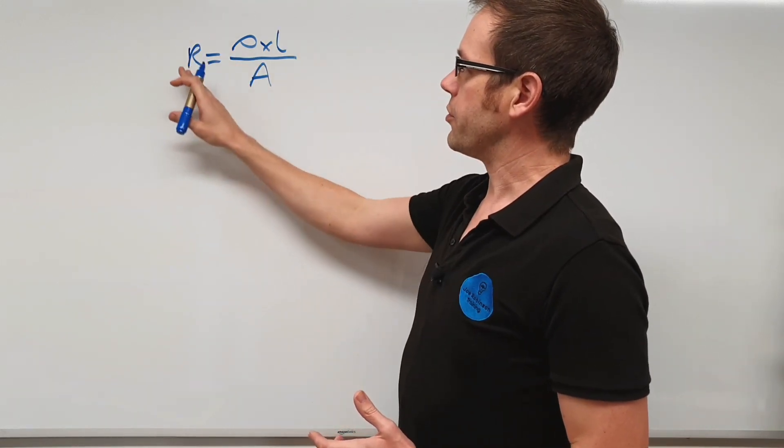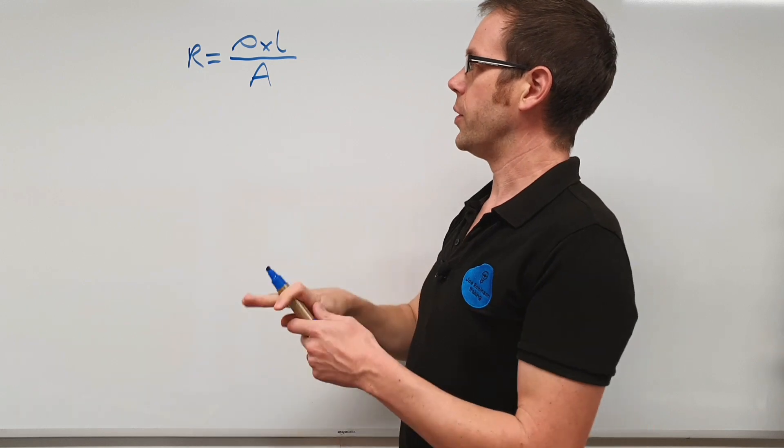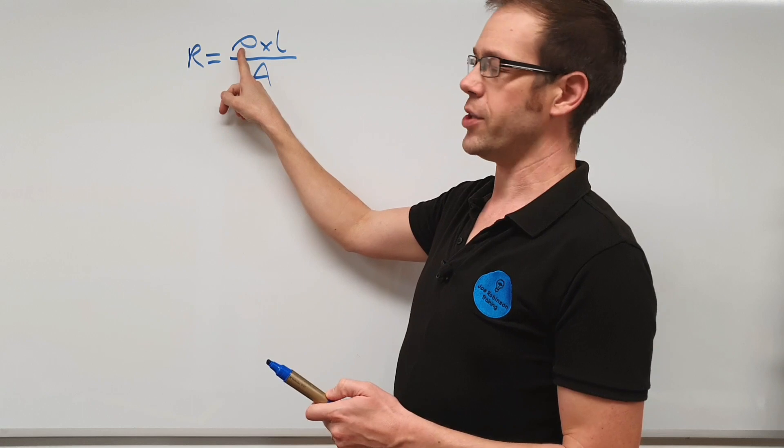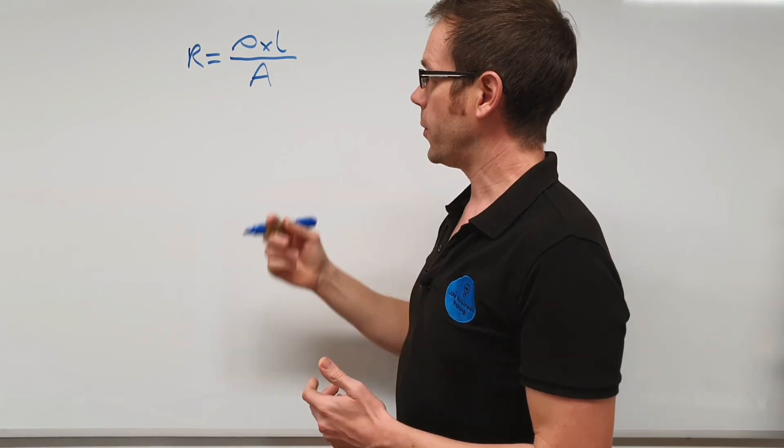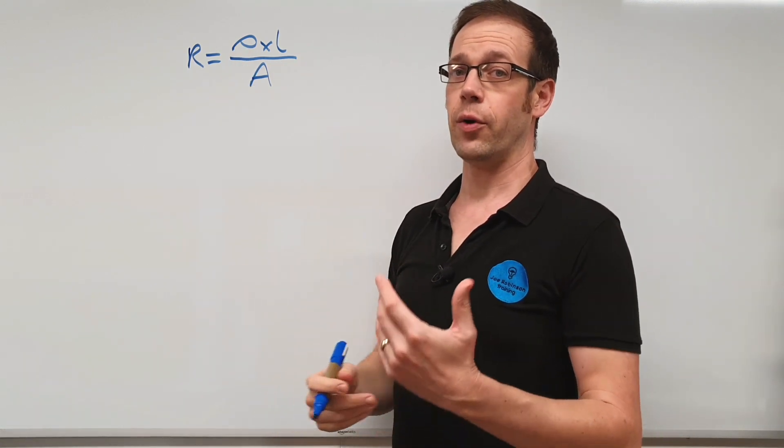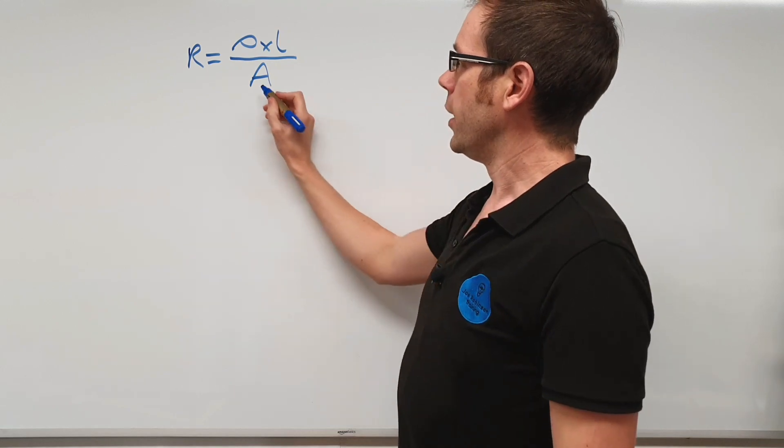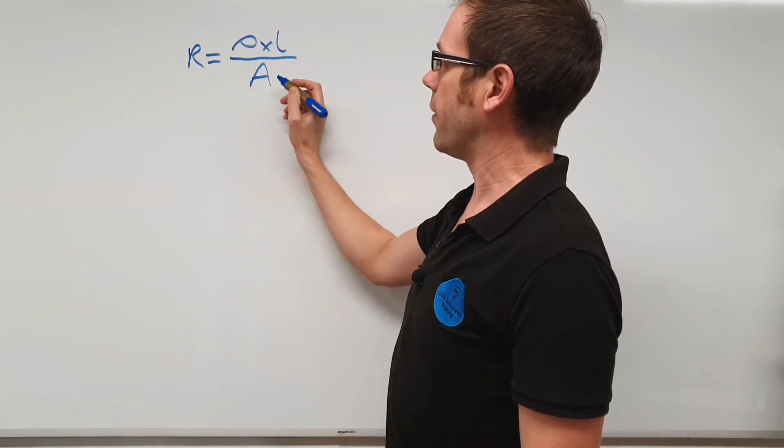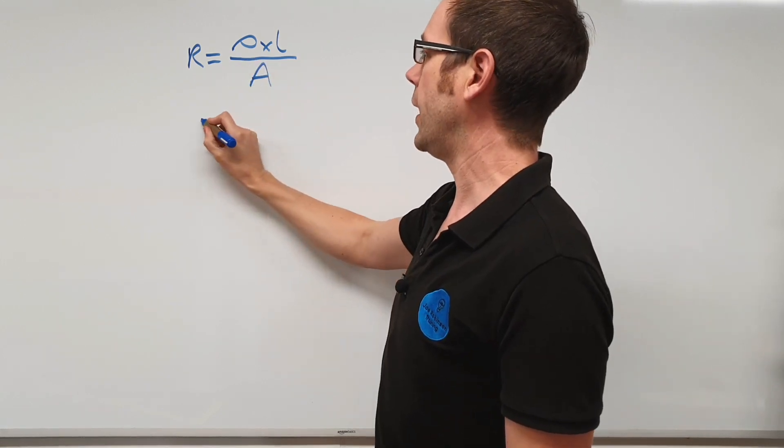So what we've got to do now is try and transpose this formula to make rho the subject because that's going to help us to understand where this unit actually comes from. So to transpose this, watch out for a future video on more detail on transposition. But here the last thing we do is divide by the cross-sectional area, so we'll get rid of that first. The opposite of dividing by A is to times by A.